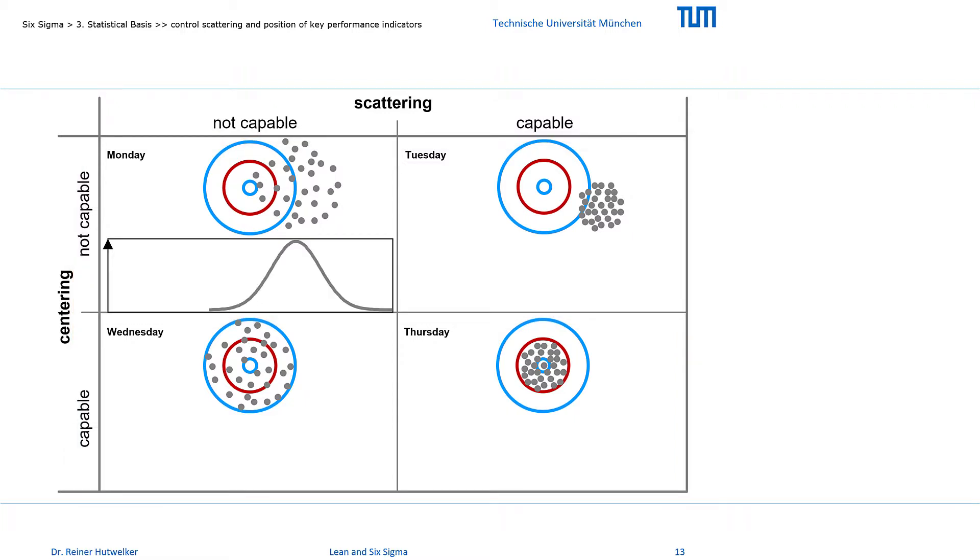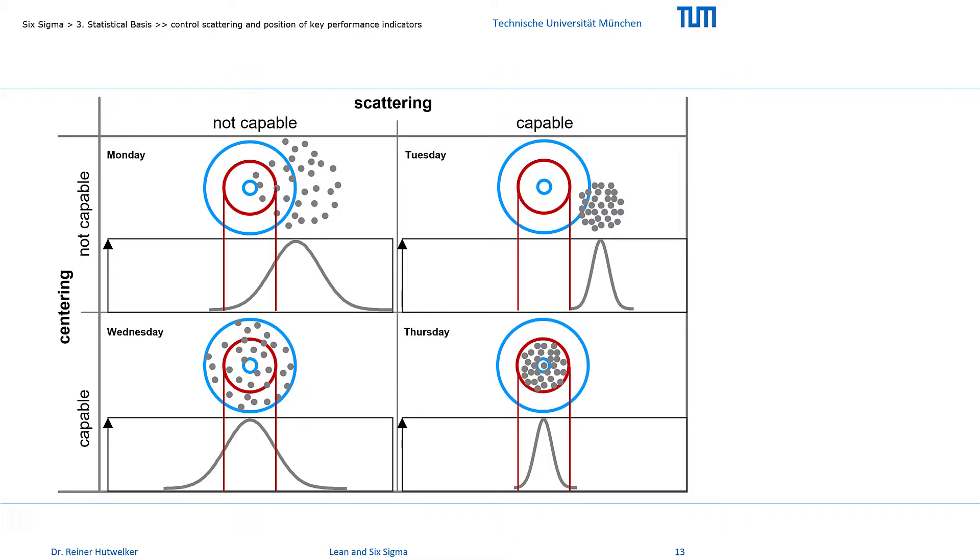If we now drop the weight data on the x-axis, then again, the idealized distributions of the weight result for each of the 4 days. If we now also project the specification limits onto the weight axis, then we can already estimate the portion that falls within and outside the specification limits, on the respective days. On Wednesday, for example, we achieved the results of about 1 sigma, and Thursday was our best day.